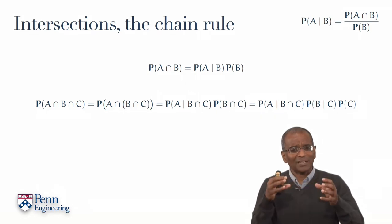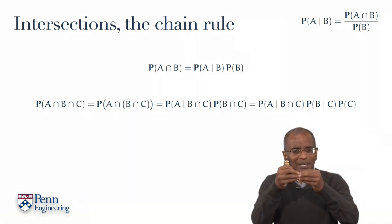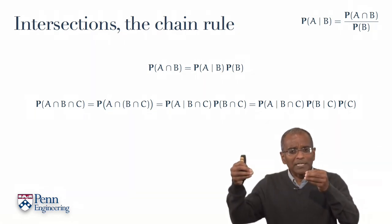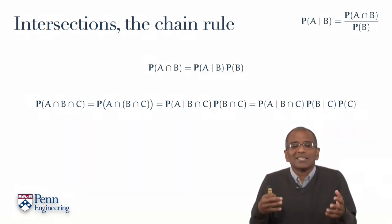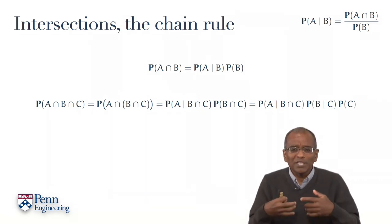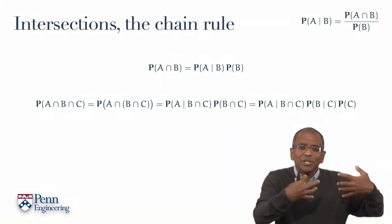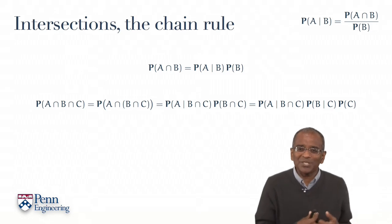The probability of A given B and C times the probability of B given C times the probability of C. And interestingly, we can write down the probability of an intersection of three events as a chain of conditional probabilities. This is sometimes called the multiplication rule, but chaining seems to be more appropriate here. You're chaining conditional probabilities together.